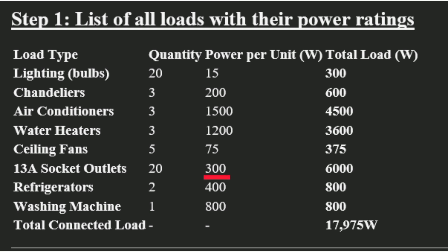We have 20 13-amp socket outlets and we assume 300 watts for every socket, so 20 of them give us a total rating of 6,000 watts. We have two refrigerators — small ones rated 400 watts each — giving us 800 watts total. The washing machine is rated 800 watts.